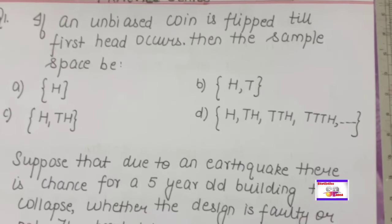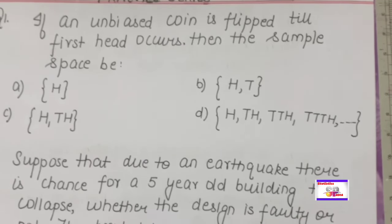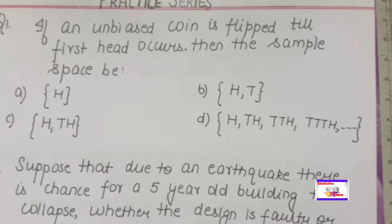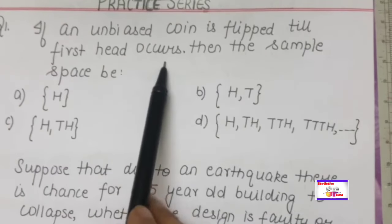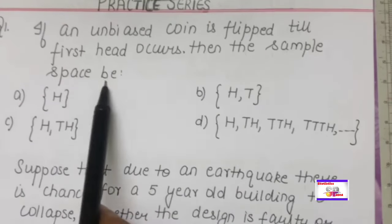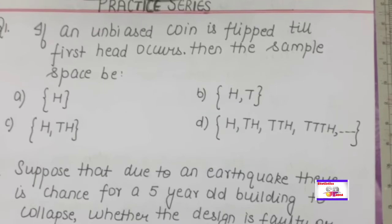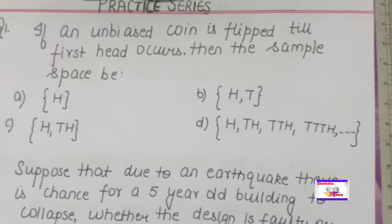Hello students, welcome to Statistics. We will continue the practice series — this is Practice Series 3. Let's begin: if an unbiased coin is flipped till the first head occurs, what is the sample space? That is, if you toss a fair coin, the first head occurrence forms the sample space.